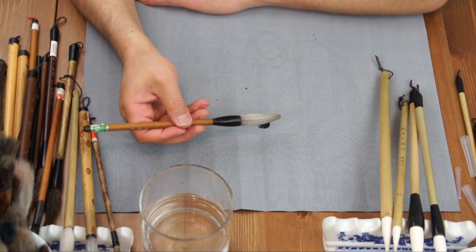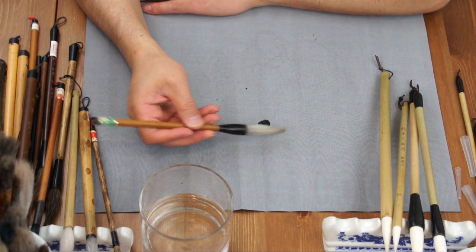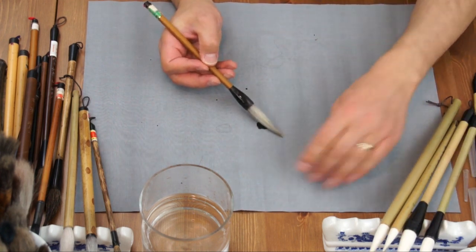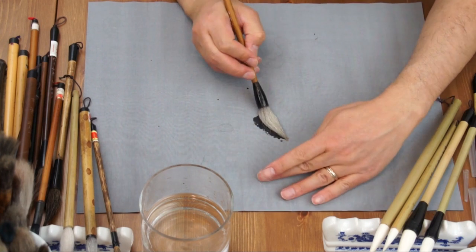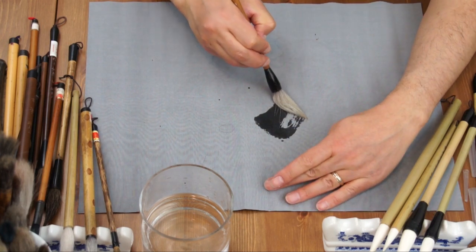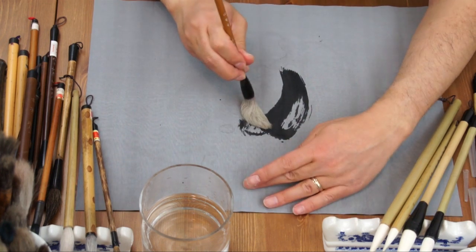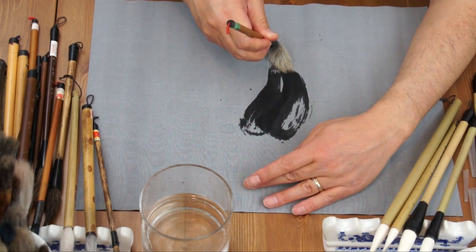When you do the stroke on the blue herring, for example, you would do a wide stroke, just one stroke for the back or two strokes.